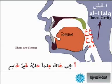These are the letters of makharij al-halq — the throat. In the next section, inshallah, we will see the common mistakes made while reciting the Quran — either by producing these letters from the wrong makharij or by giving them a different quality or different attribute.